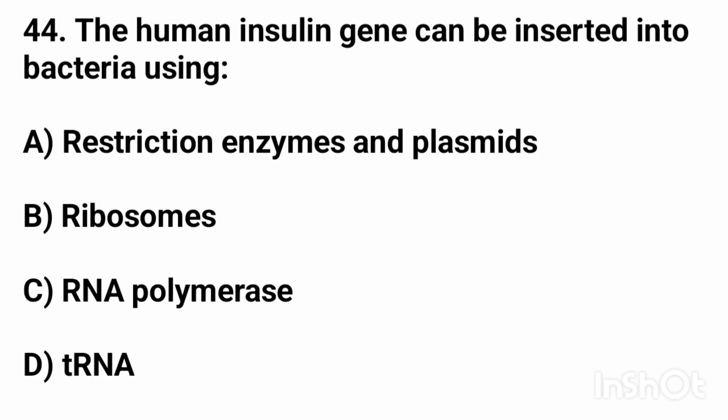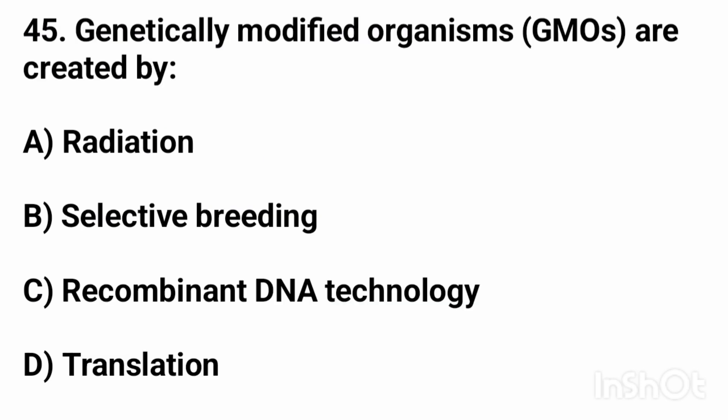Question forty-four: the human insulin gene can be inserted into bacteria using? The right answer is option A, restriction enzymes and plasmids. Question forty-five: genetically modified organisms are created by? The right answer is option C, recombinant DNA technology.